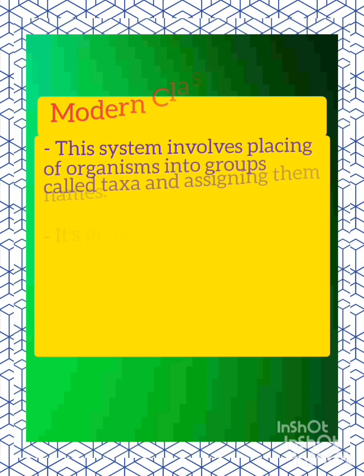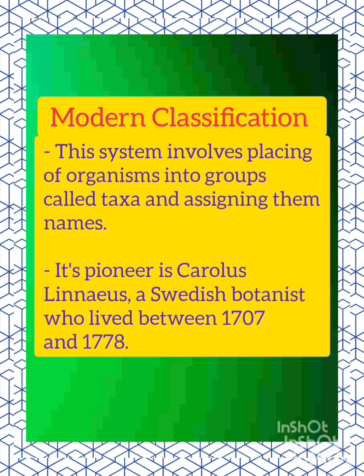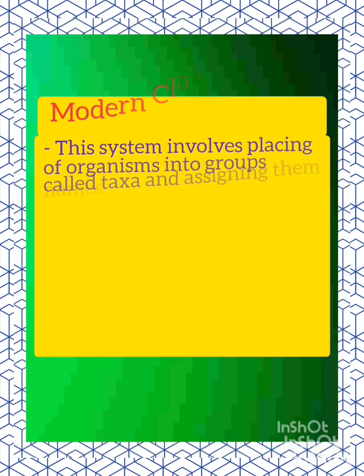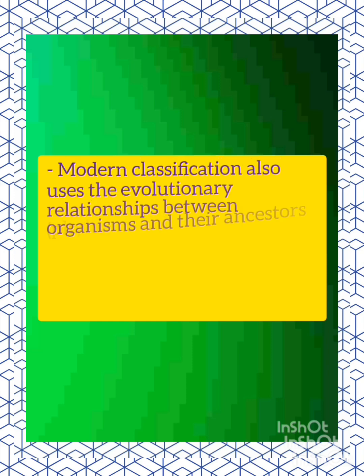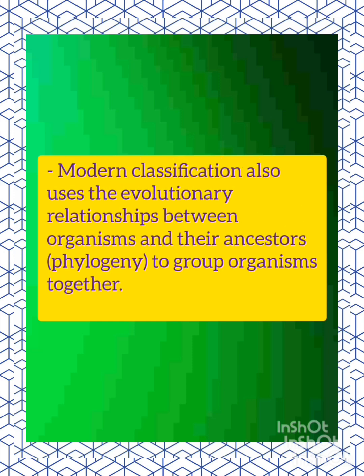Modern classification is a system that involves placing organisms into groups called taxa and assigning them names. It was pioneered by Carolus Linnaeus, a Swedish botanist who lived between 1707 and 1778. Modern classification also uses the evolutionary relationship between organisms and their ancestors — that is, phylogeny — to group organisms together.